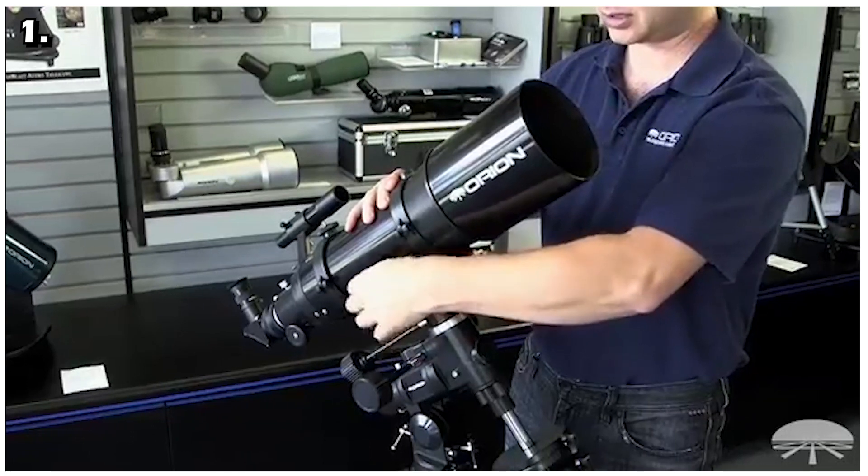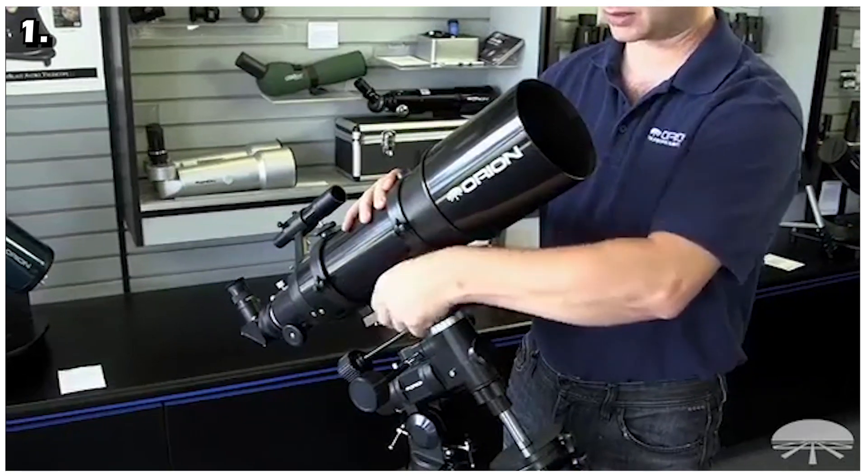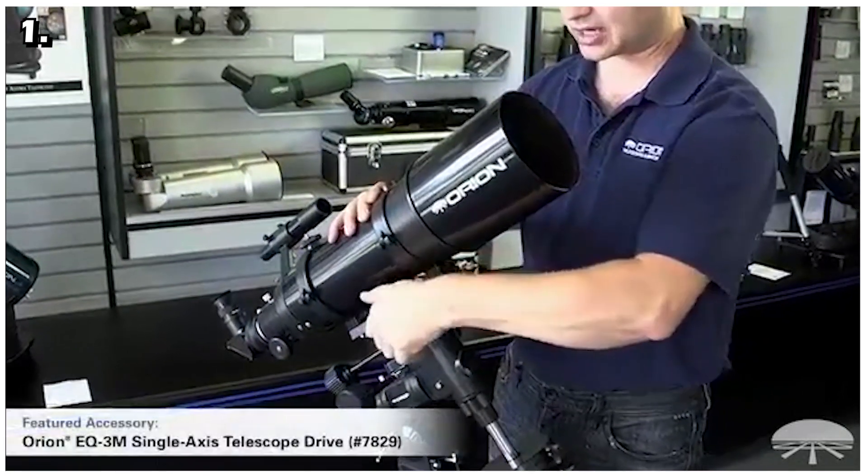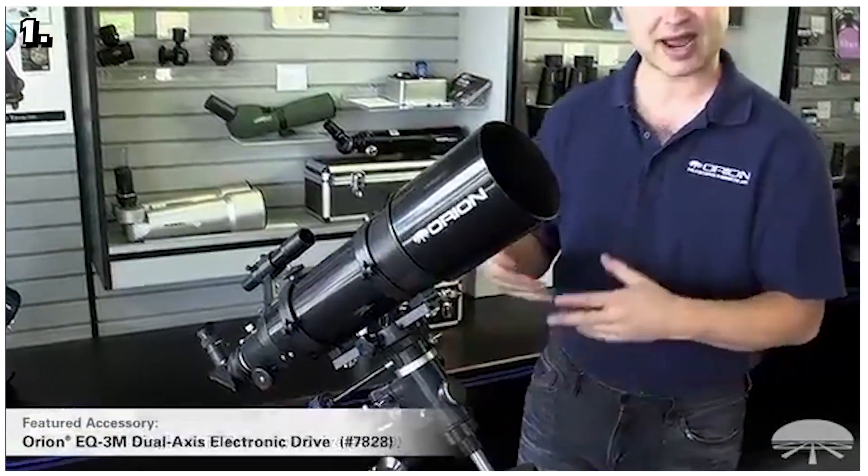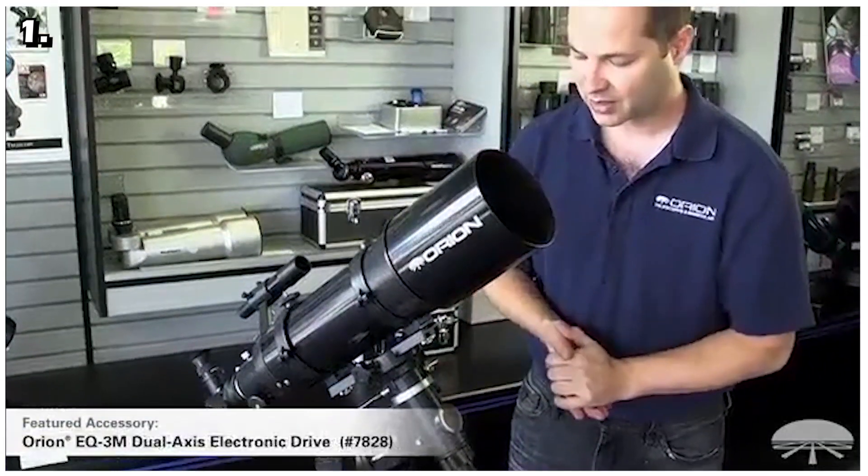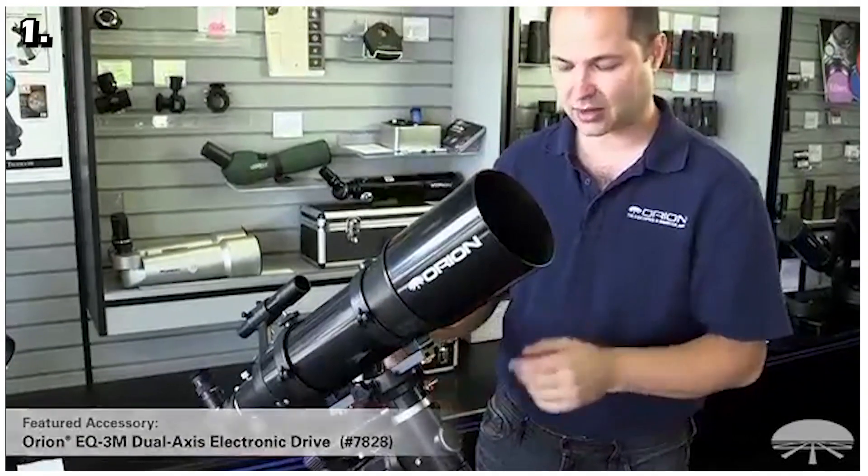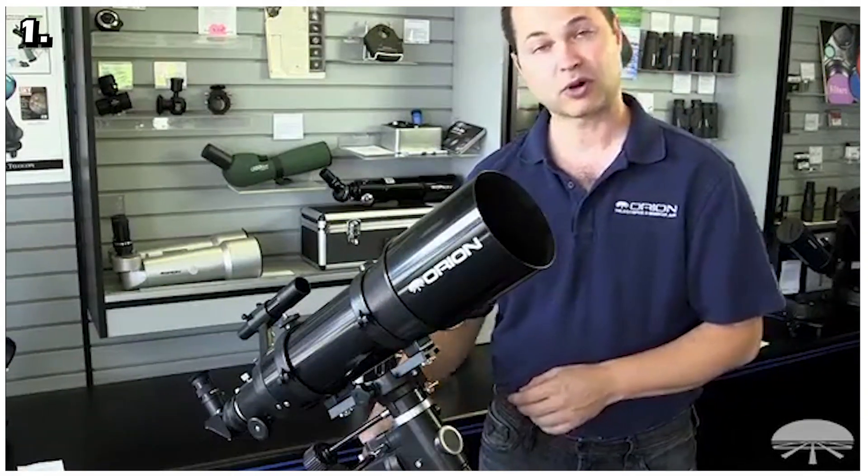Not limited to visual use, its optical system makes the Astroview 120ST an excellent refractor telescope to use for wide field astrophotography in addition to observational astronomy. It comes with a 6x30 finder scope which lets you accurately aim the refractor anywhere in the sky.